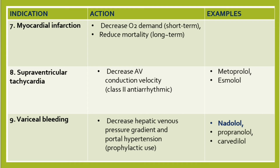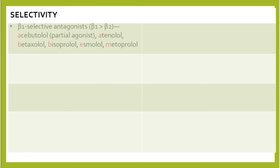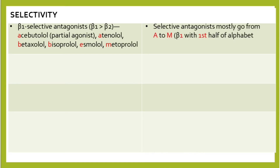Now let's talk about selectivity. Beta-1 selective antagonists have more beta-1 selectivity than beta-2. Examples include acebutolol — which is considered a partial agonist due to its intrinsic sympathomimetic activity — atenolol, betaxolol, bisoprolol, esmolol, and metoprolol. To remember this, selective antagonists mostly go from A to M — the first half of the alphabet.